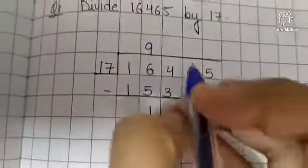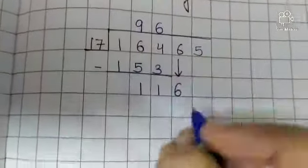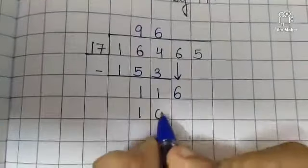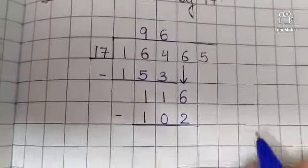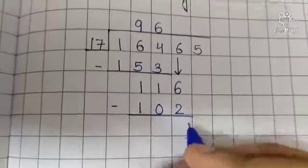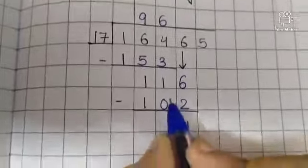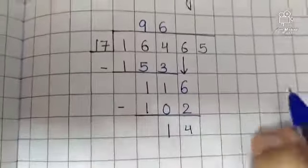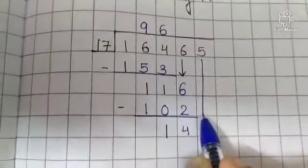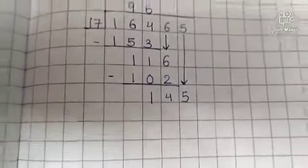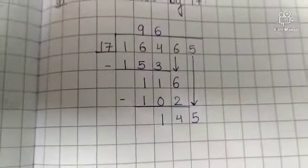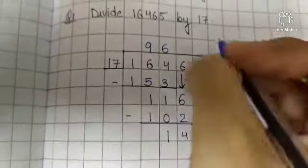Now 116. So we need to find what times 17 gives us close to 116. 17 eights are...